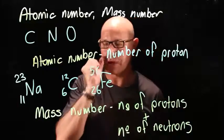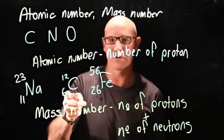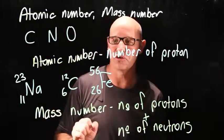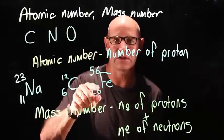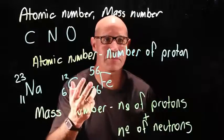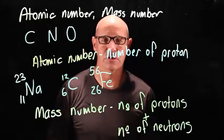So that means carbon has six protons and then six neutrons. So six and six is 12. Iron has 26 protons, so therefore it must have 30 neutrons.